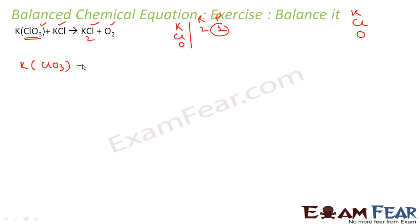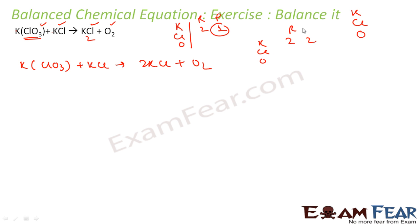So what you get is: KClO3 + KCl = 2KCl + O2. Now let's again see if it is balanced. Potassium is 2 here, and here also 2. Chlorine is 1 + 1 = 2, here also 2. Oxygen is here 3, and here it is 2.